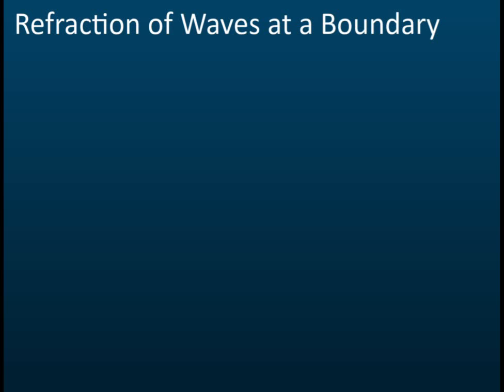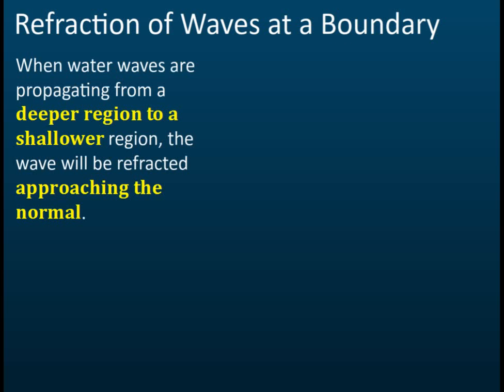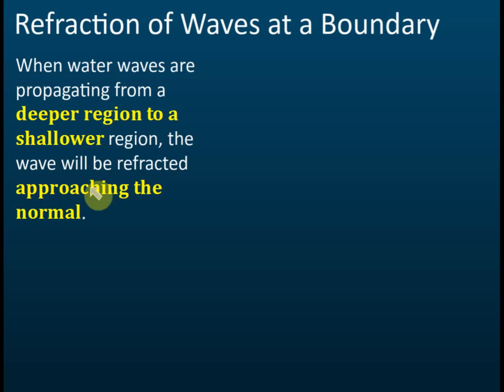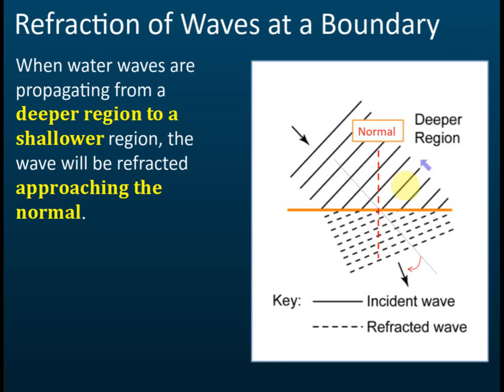There are three cases that you need to know. The first case is when water waves move from a deeper region to a shallower region — that is, from a higher speed to a lower speed. Because in a deeper region waves move faster and in a shallower region they move slower, going from faster to slower means the wave will be refracted closer to the normal.